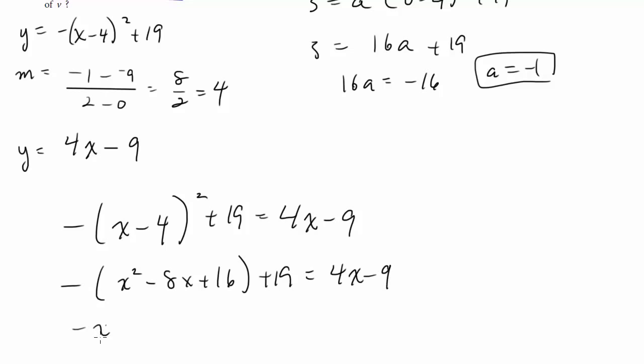Now we'll distribute this negative. I get negative x squared plus 8x minus 16 plus 19, which becomes plus 3.